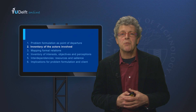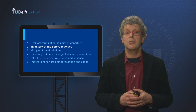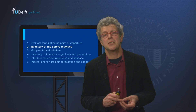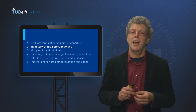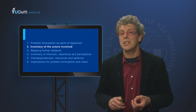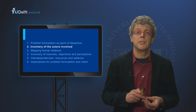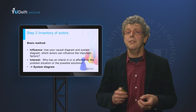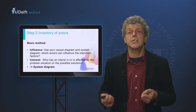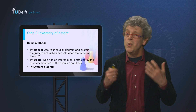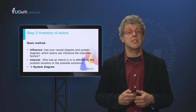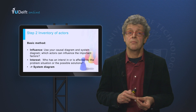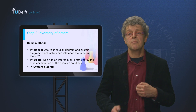This first step was quite straightforward. We now come to the second step: making an inventory of the actors. Here we use the basic modeling techniques taught in the Principles of Policy Analysis course. The basic method is by using your preliminary causal diagram or systems diagram and by asking two questions: which actors can actually influence important factors in my system, and who has an interest in the problem or is affected by the possible solutions? So there are two I's — influence and interest.